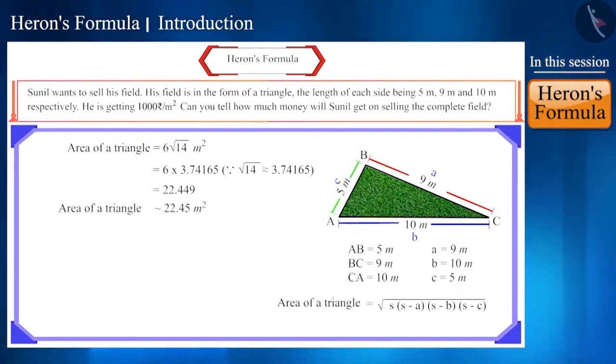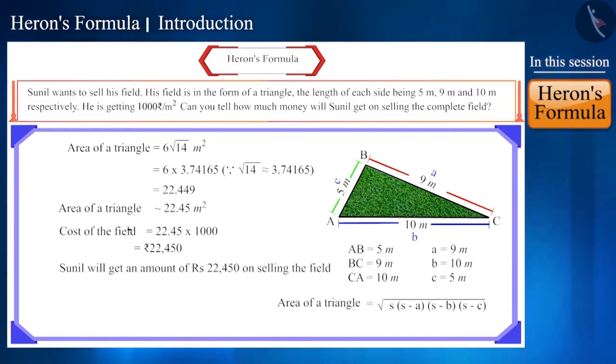The solution does not end here. We need to find the amount of money that Sunil will get on selling the field. For every square meter Sunil gets rupees 1000, so for 22.45 square meters of field he will get a total of 22,450 rupees.